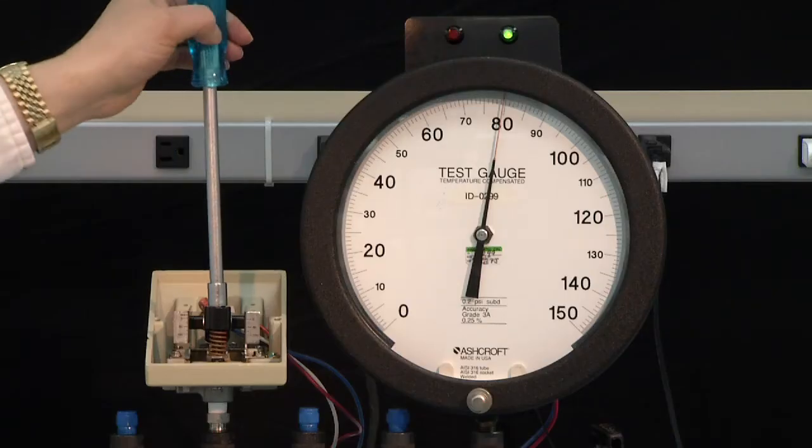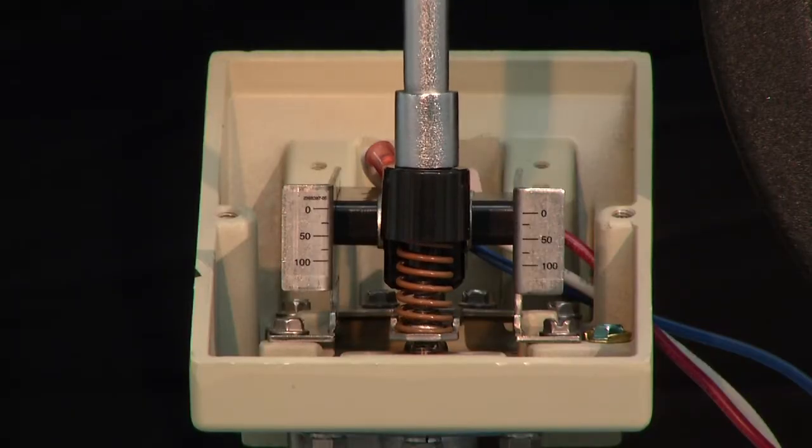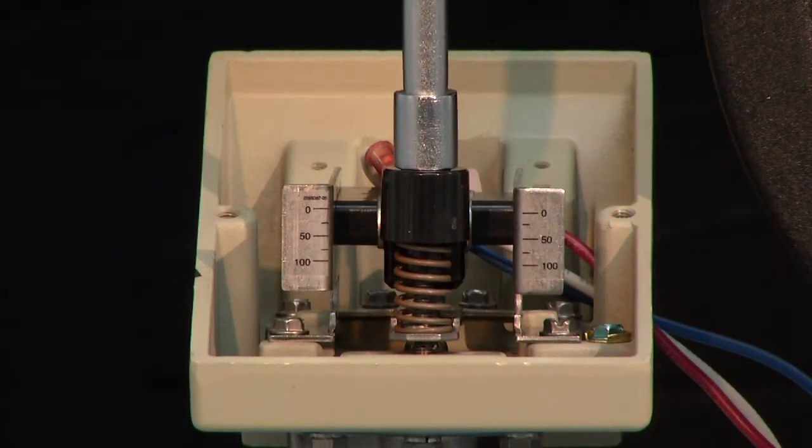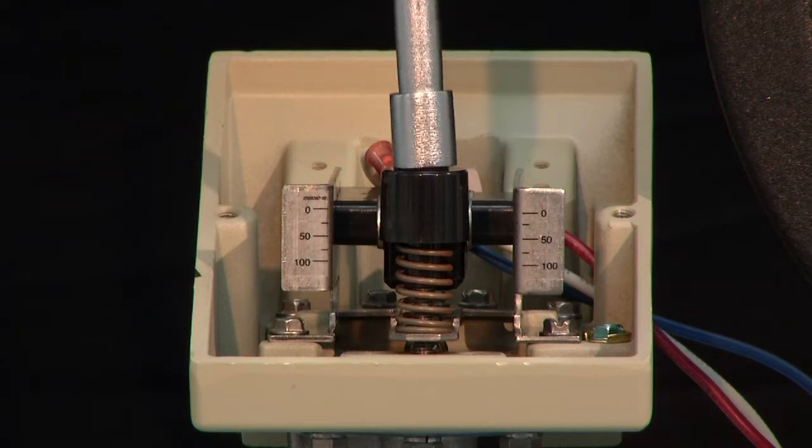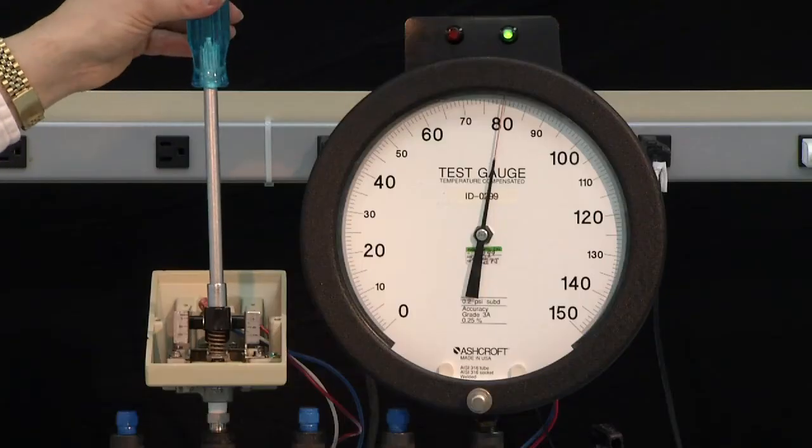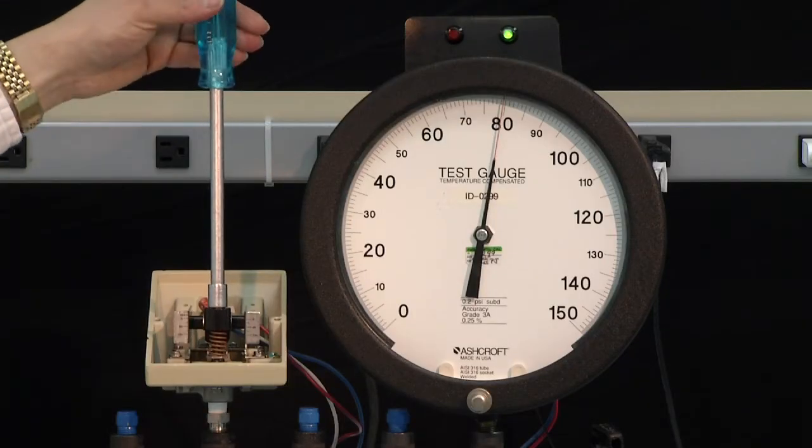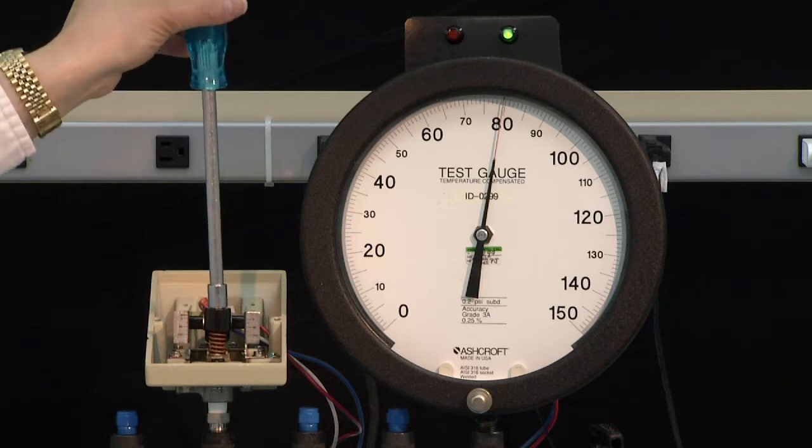To increase the set point, we turn the knob clockwise. We will continue to adjust until the switch turns off. That will be the green light turning to red.